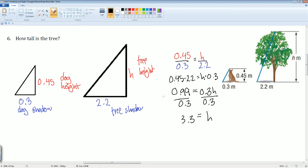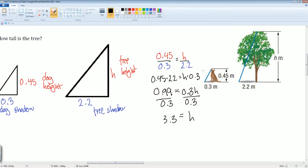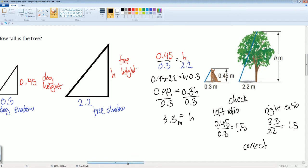It doesn't look right. So I'm going to check. So my left ratio was 0.45 divided by 0.3, that's going to be equal to 1.5. Now I'm going to do my right ratio. That is height was 3.3, divide this by 2.2. 3.3 divided by 2.2, yep, that gets me 1.5. The fact that they match up, I could say that my height is correct. So my height of the tree is 3.3 and it is in meters. So 3.3 meters.